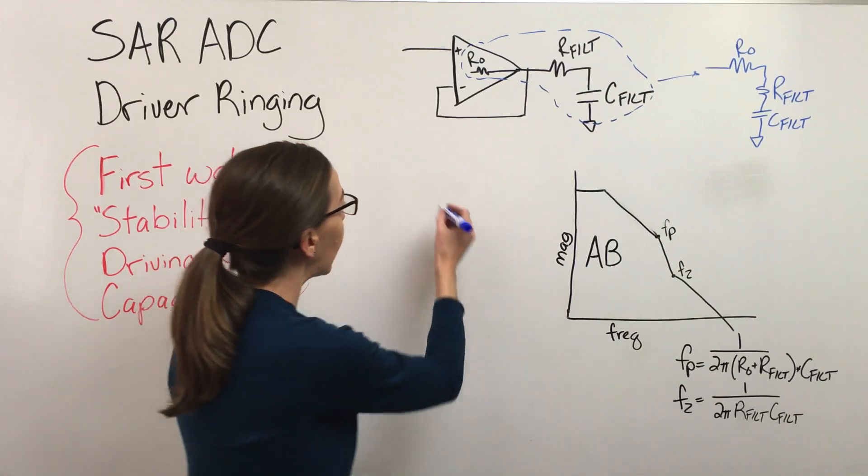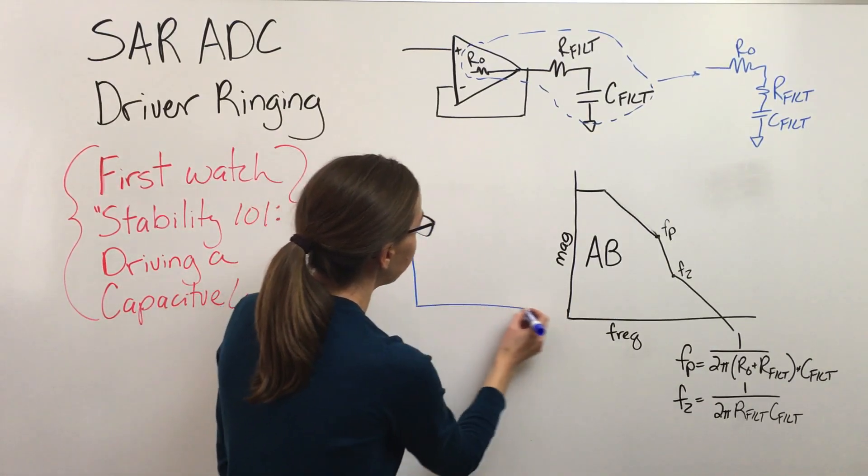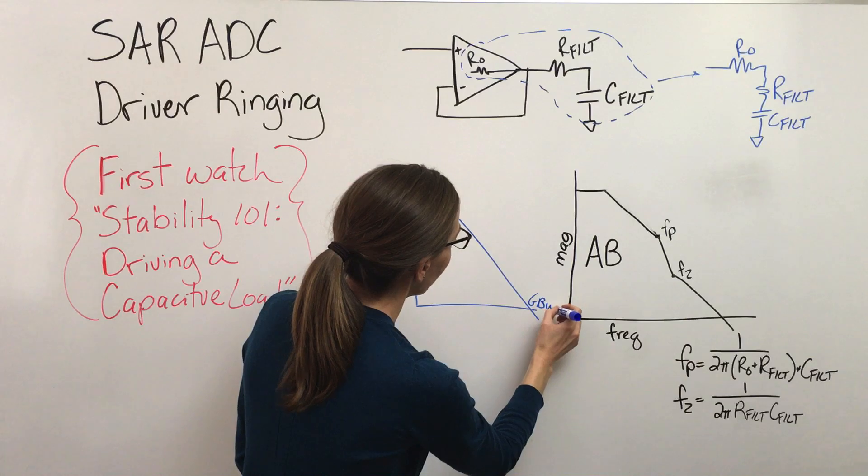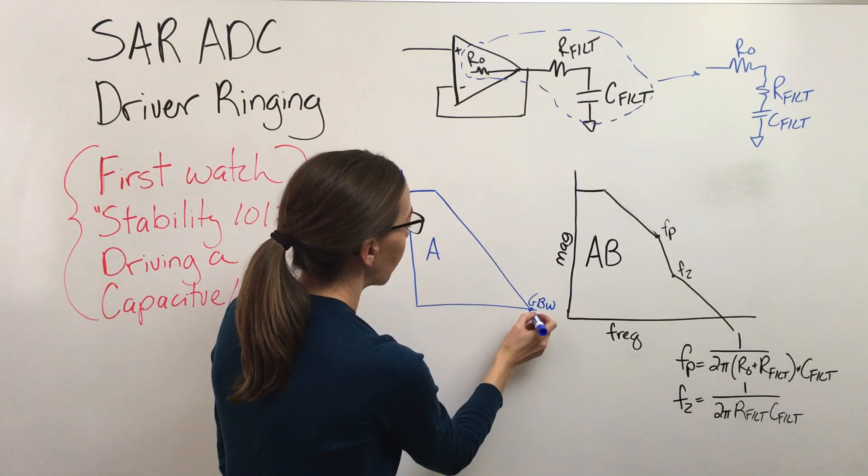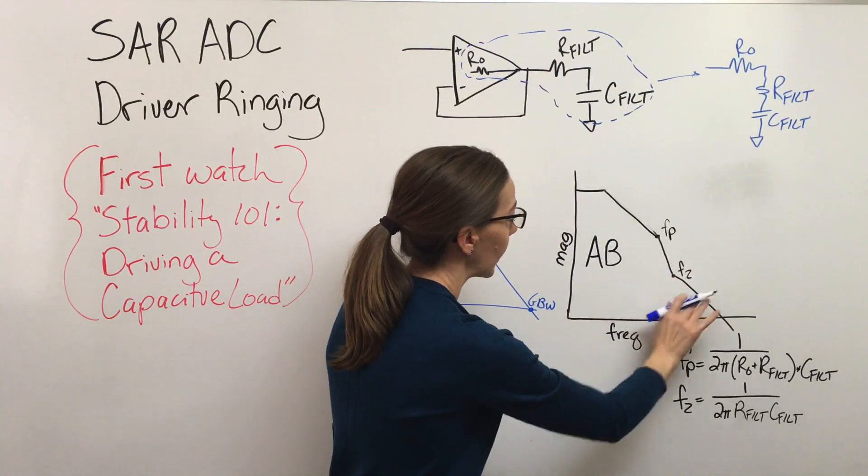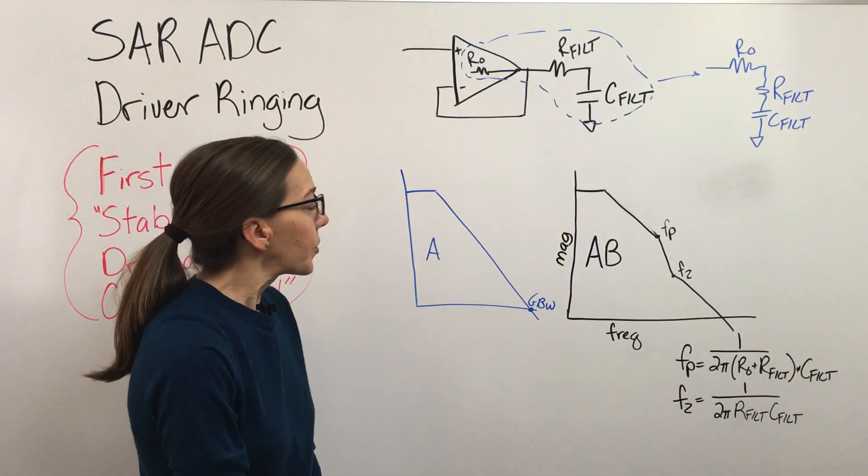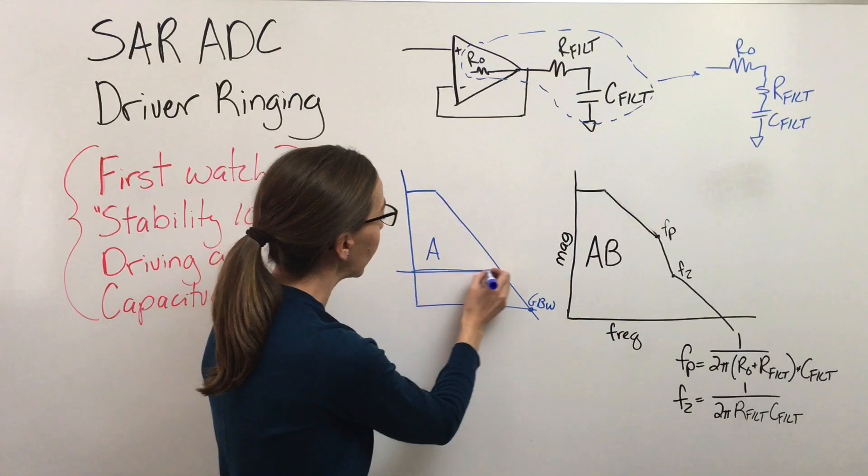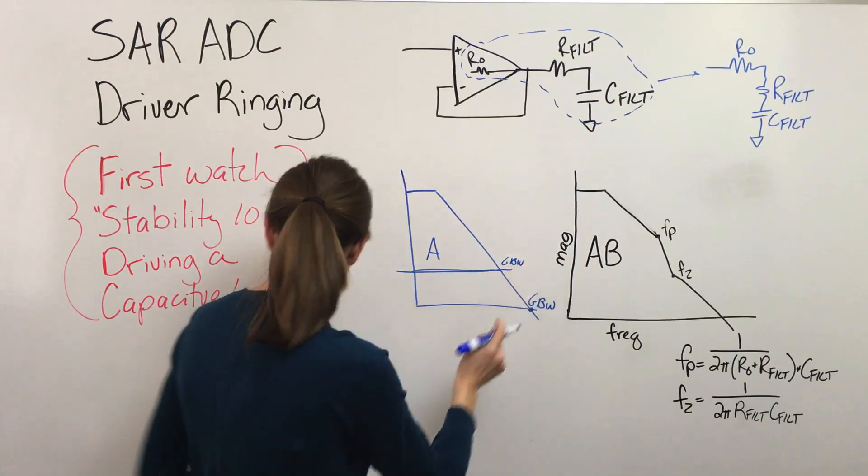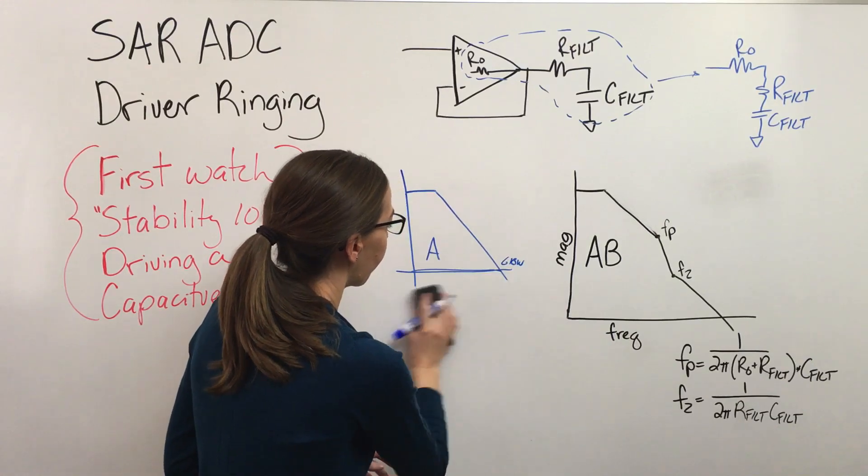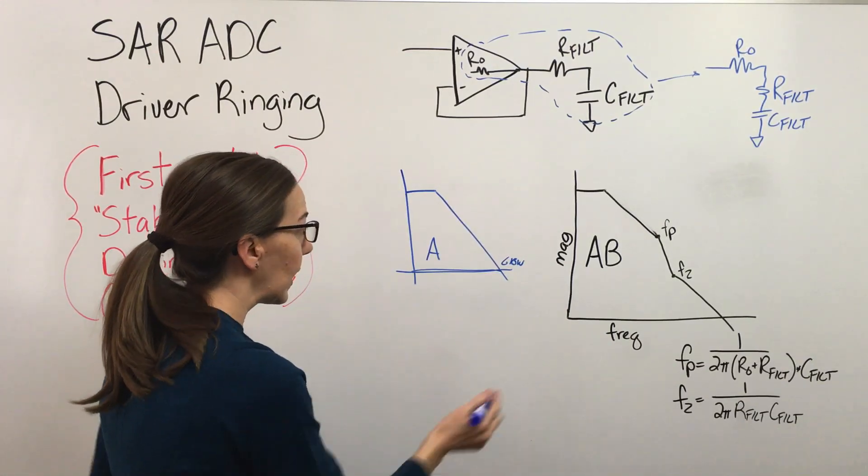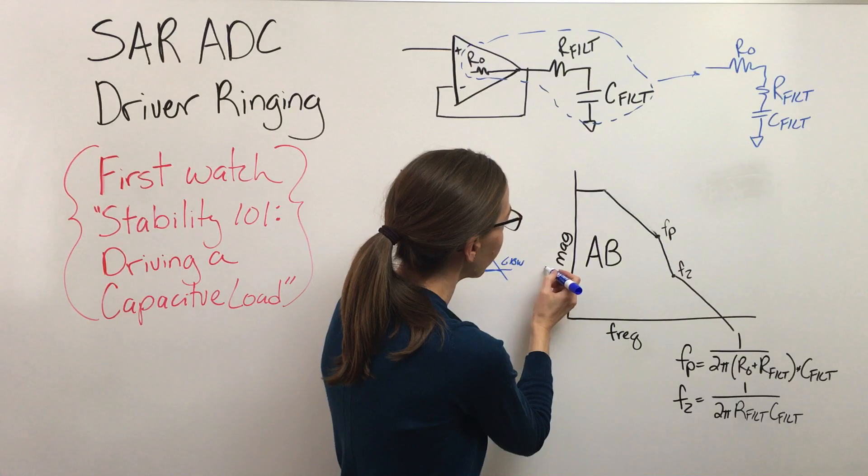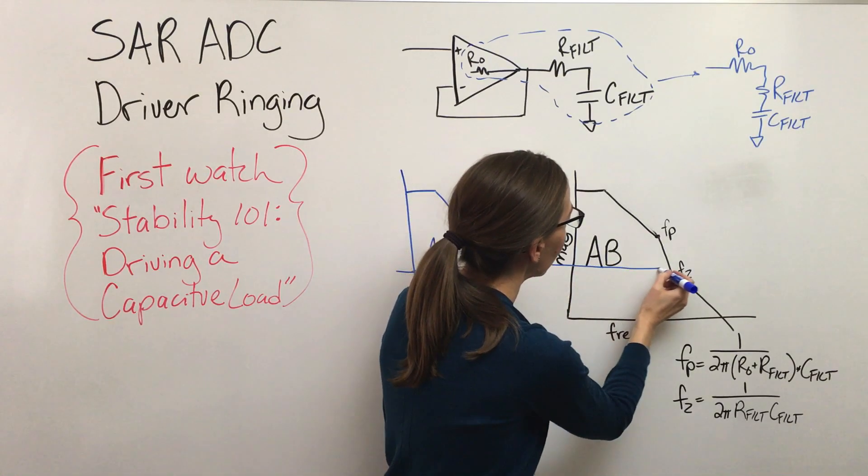So this would be an example for if we had a device where maybe the gain bandwidth was quite large and so it was pushing all this out. Let's say you picked a device that had a smaller gain bandwidth, so let's say that it looked more like this. Then essentially what you'd see is this plot would shift to look more like this.